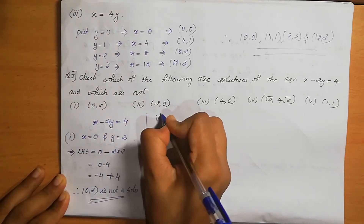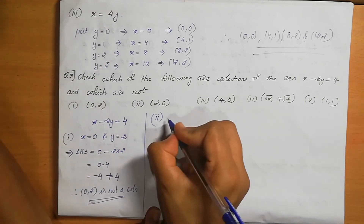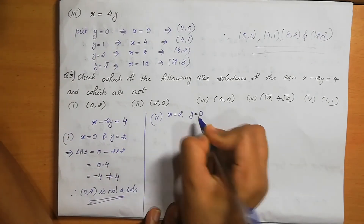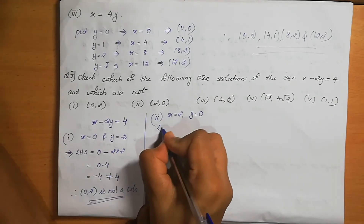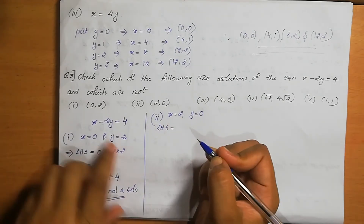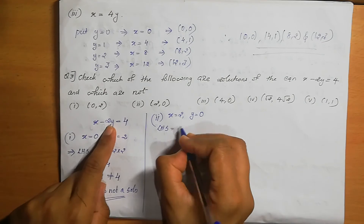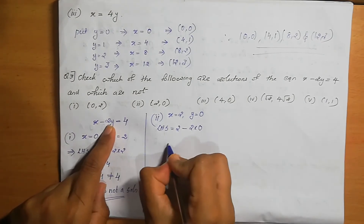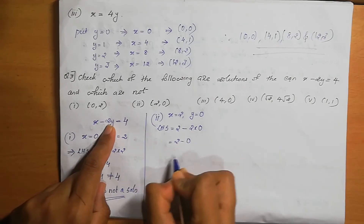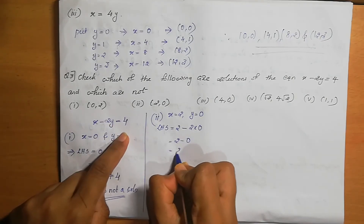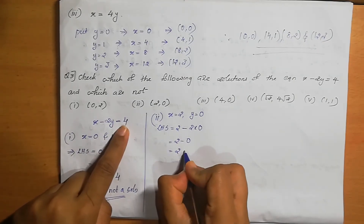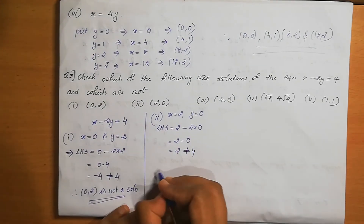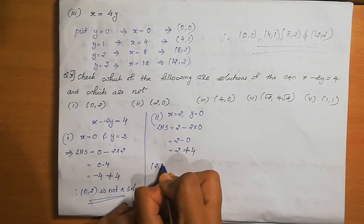Second, check (2, 0): x=2, y=0. LHS = 2 − 2×0 = 2 − 0 = 2. Since 2 ≠ 4, LHS ≠ RHS. Therefore, (2, 0) is not a solution.